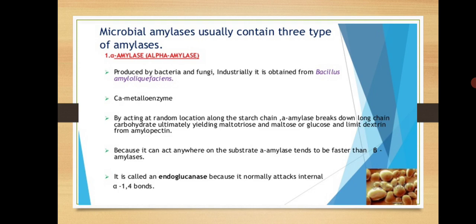Alpha amylase randomly cleaves the starch molecule, releasing maltotriose, maltose, single glucose units, or limit dextrin. Limit dextrin means a short chain of starch — a short-length fragment. Since alpha amylase can act anywhere on the substrate, it is faster than beta amylase, which cuts at a specific location. Alpha amylase is therefore considered faster than beta amylase.